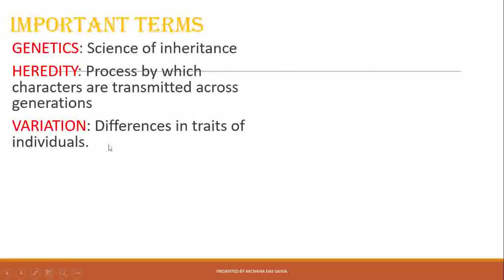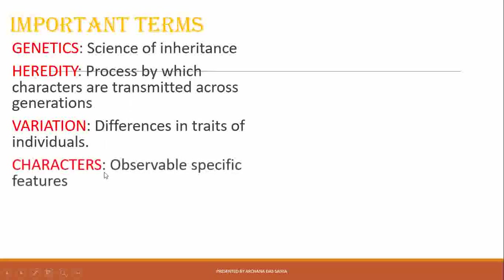Variation is created during cell division, which is meiosis — we have already learned about it earlier. Now, characters are those observable, specific features present in an individual. For a plant, say a rose plant, the specific characters include leaves being green in color, it has prickles, and its flowers come in different colors.